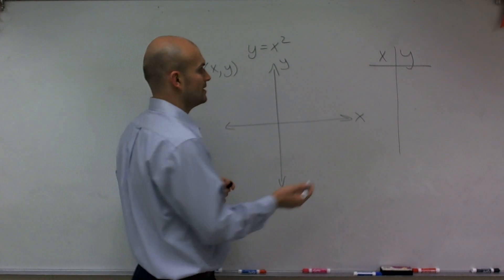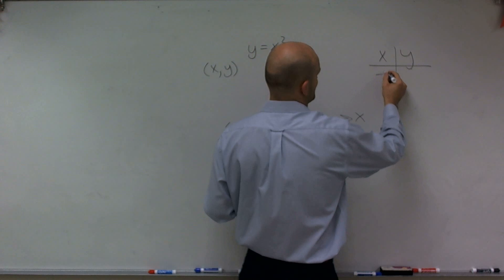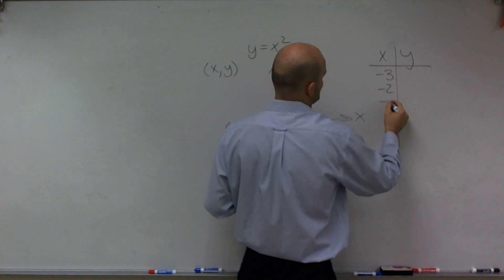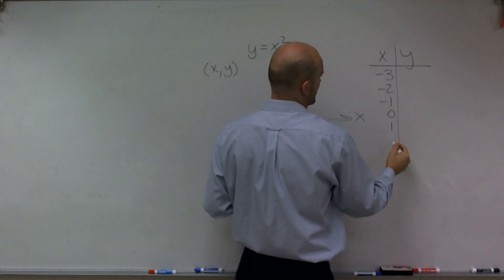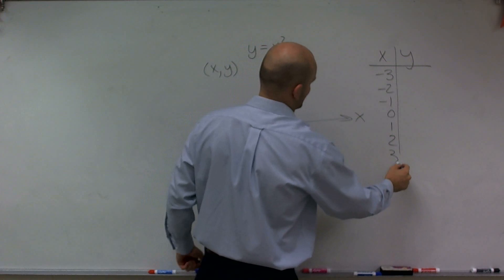So I know y equals x squared. I'm going to start with this one just to do negative 3, negative 2, negative 1, 0, 1, and 2. And let's do 3 as well.